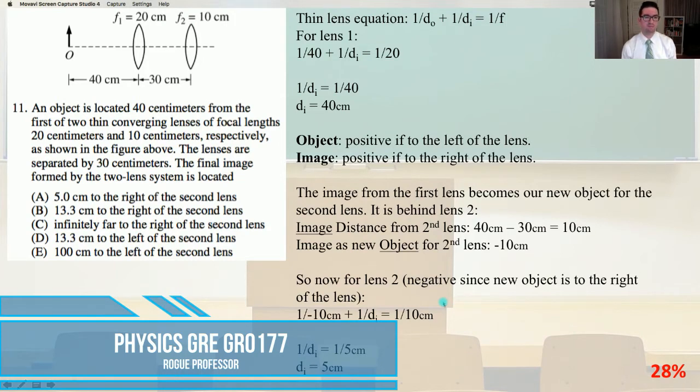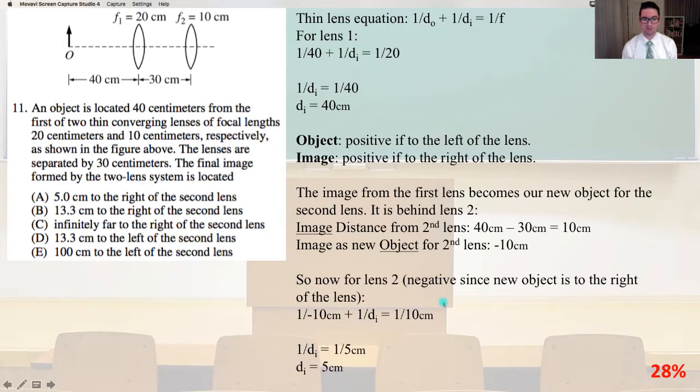An object is located 40 cm from the first of two thin converging lenses of focal length 20 cm and 10 cm respectively, as shown in the figure above. The lenses are separated by 30 cm. The final image formed by the two lens system is located where? For the thin lens equation, 1 over DO plus 1 over DI equals 1 over F.